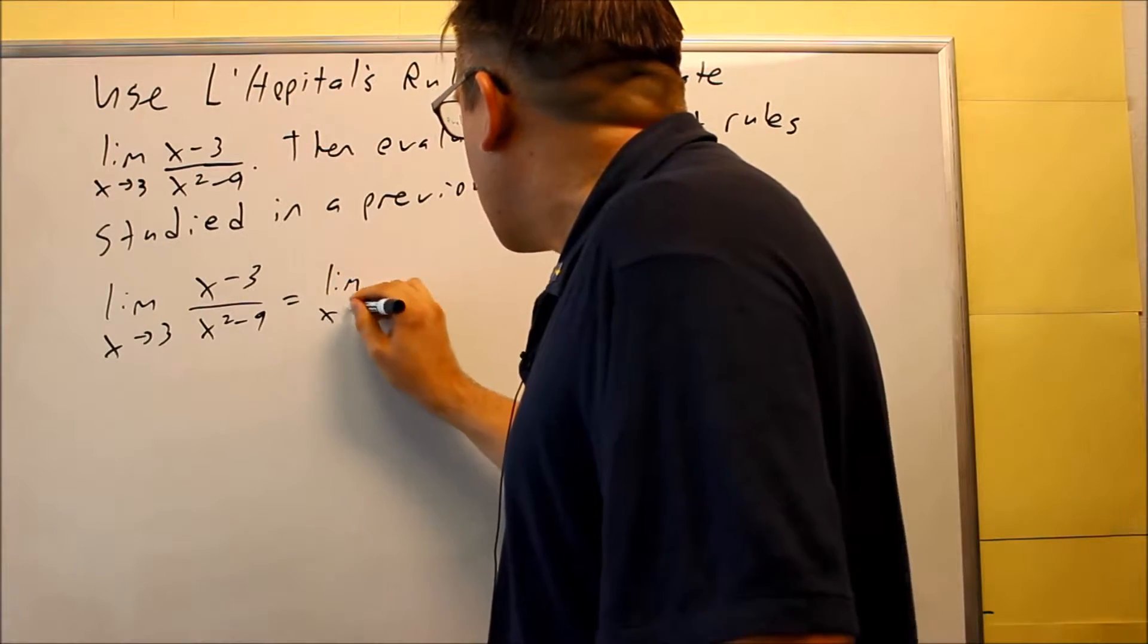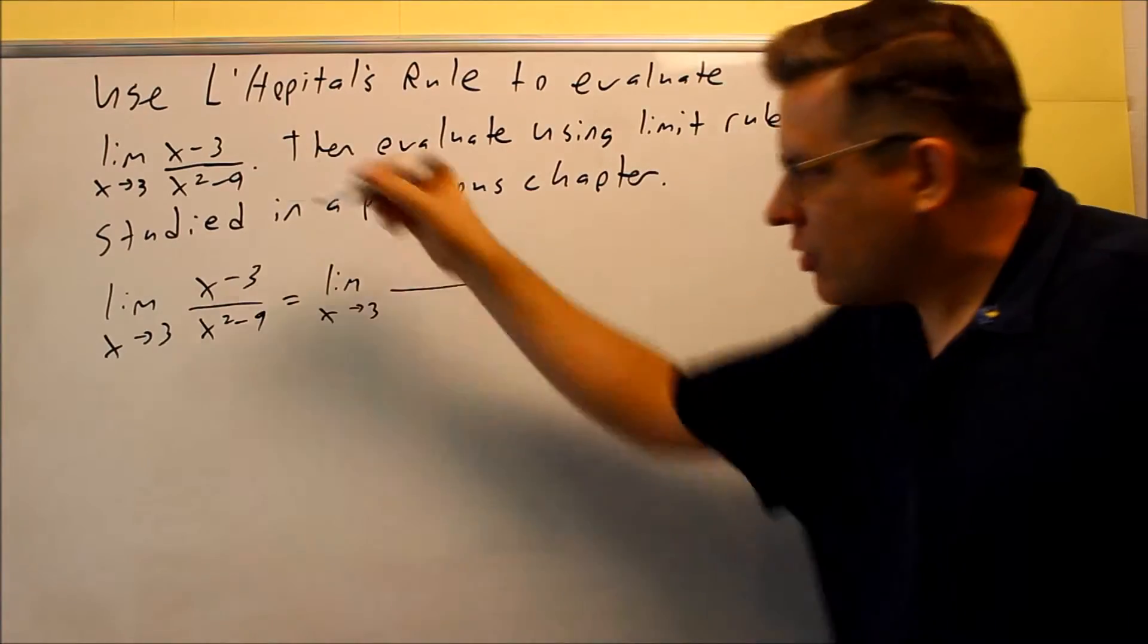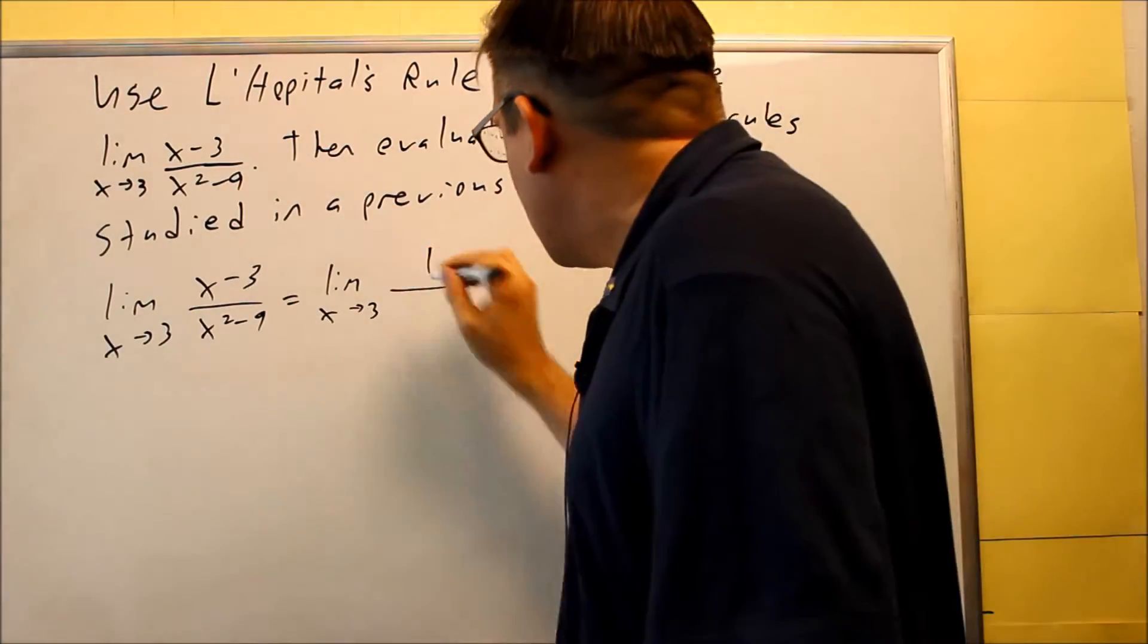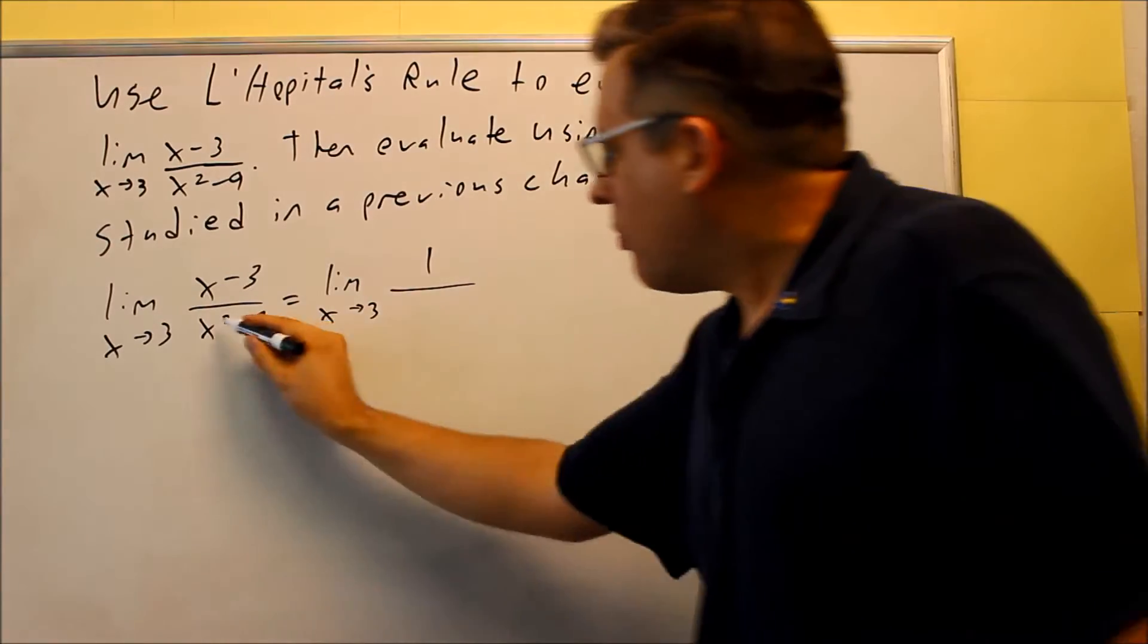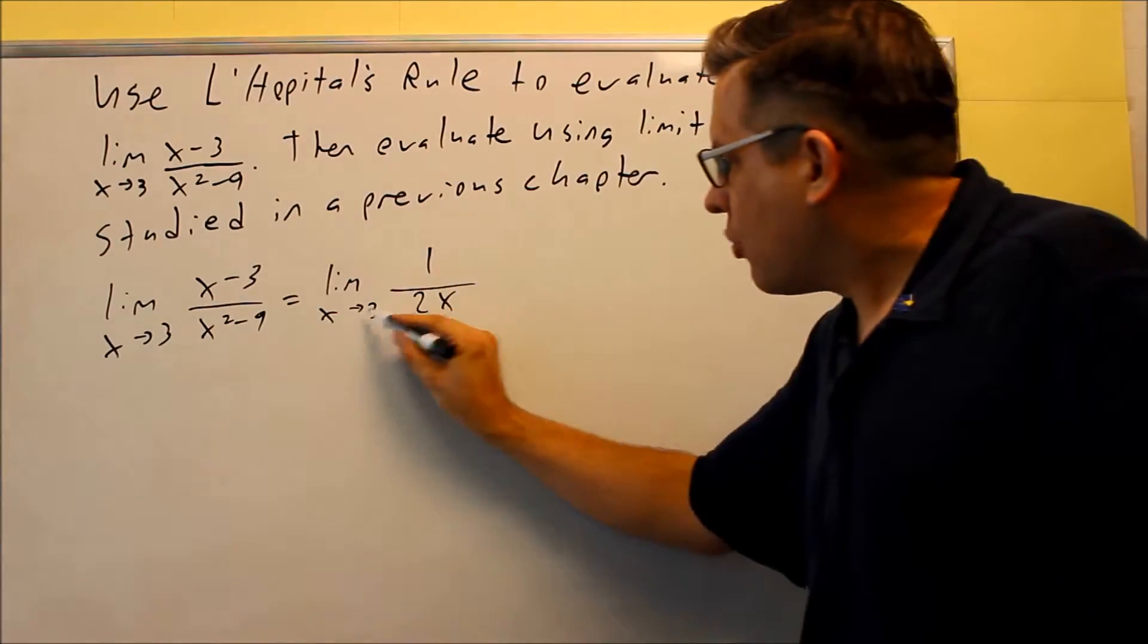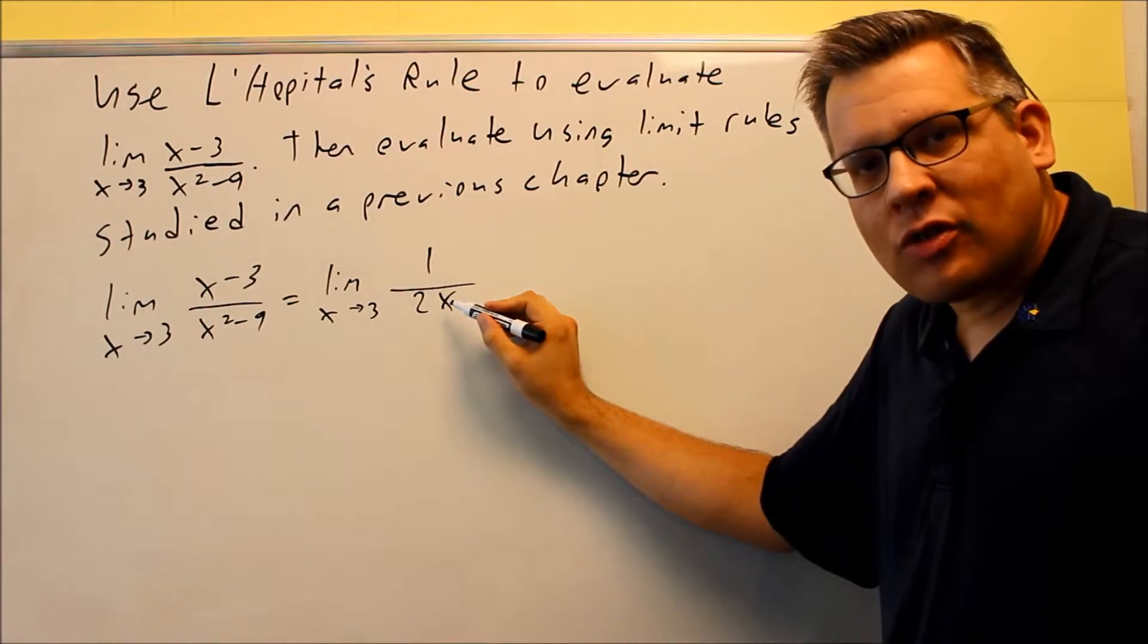It means I'm going to do the limit as x goes to 3. Then you're going to take the derivative of the top and bottom separately. The derivative of the top is going to be 1. The derivative of the bottom is going to be 2x. Now, you're going to plug 3 in there. If I plug 3 in, this time notice I don't get 0 over 0 anymore.